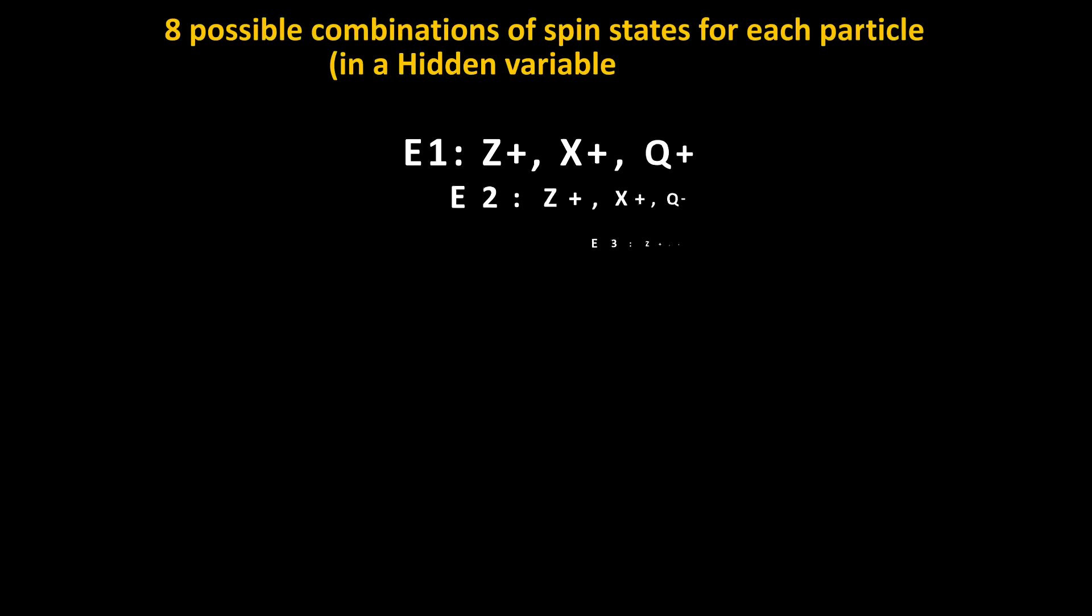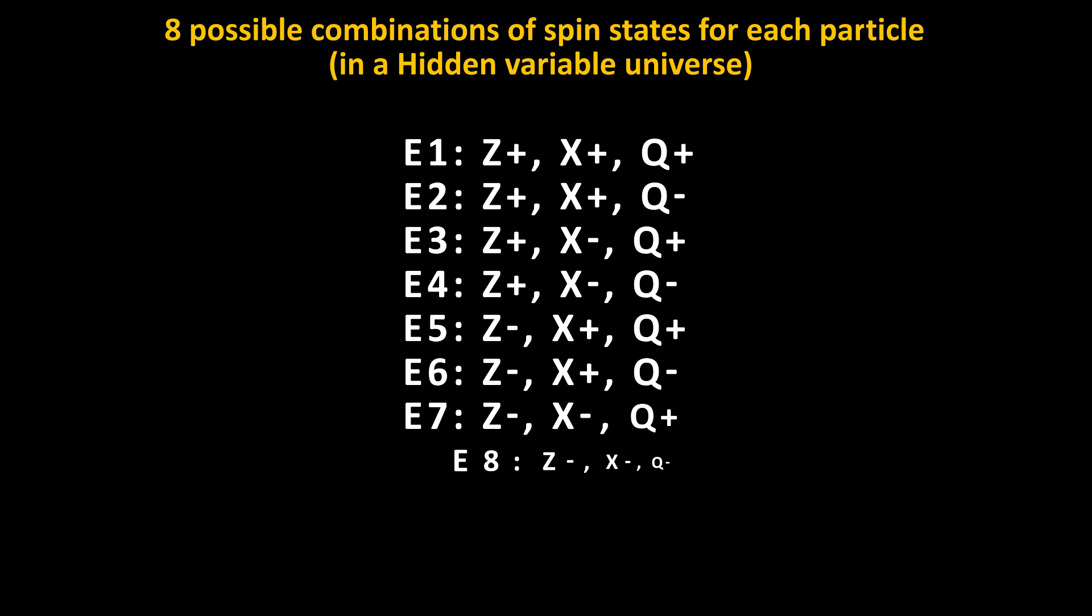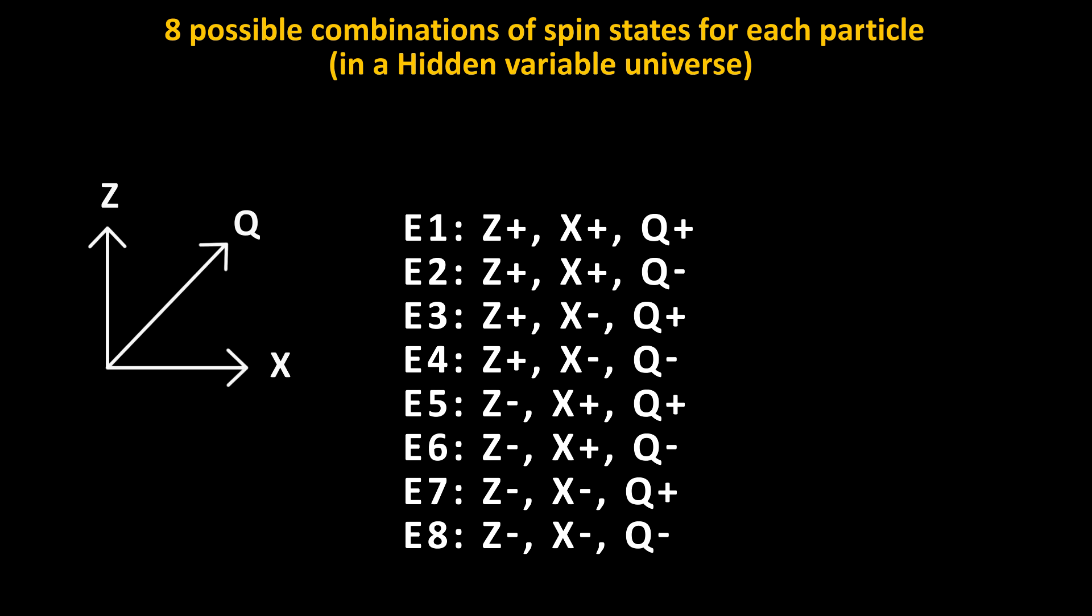What Bell's inequality does is it says now let's make a third measurement that is somewhere in between the z and x axes. In our example, we use 45 degree angles to the z and x direction. We'll call this the q direction. So in a universe where local hidden variables are true, when the two particles are emitted, they know what their state is going to be in all three directions: z, x, and q from birth.